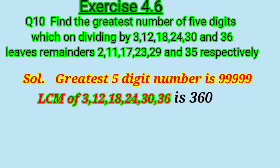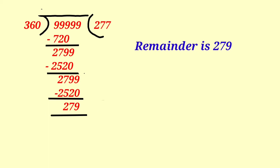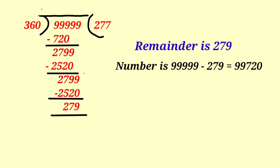Now after that we know what we have to do — we will divide the greatest 5-digit number by the LCM. So 99,999 divided by 360. Now this is the division where the remainder is 279. For finding that number we will subtract the remainder from the greatest 5-digit number.